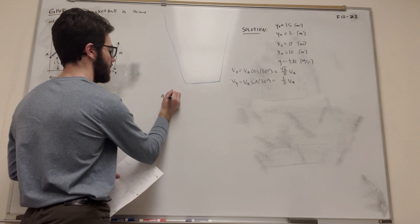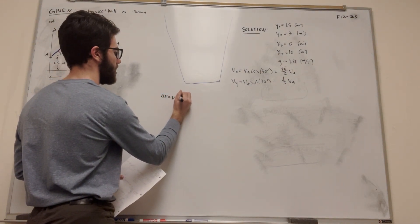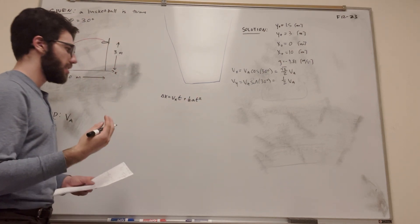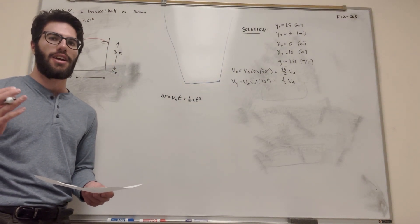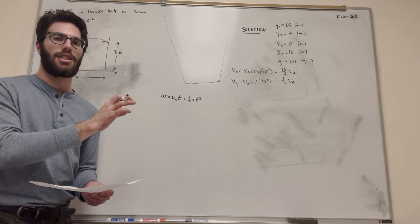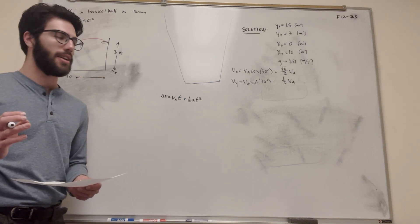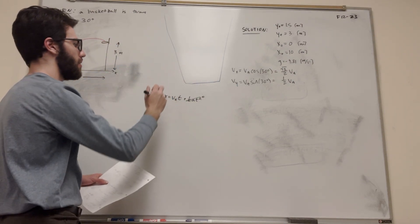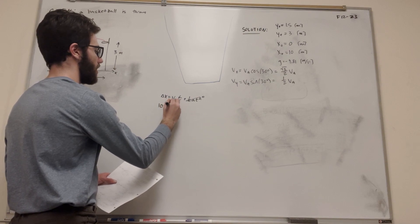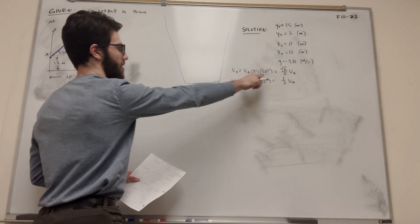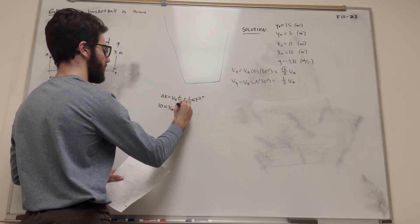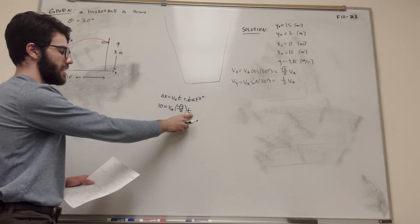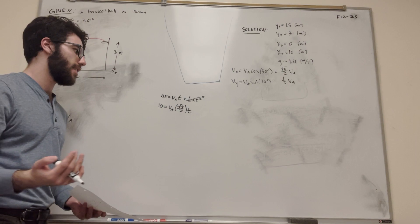Δx equals velocity-x times time plus (1/2)·acceleration·t². In the x direction there's no acceleration — the ball isn't going to accelerate or decelerate horizontally, so a equals zero. Delta x is x-final minus x-initial; x-initial is zero, so we get: 10 = va·(√3/2)·t. We still need time, so we have two unknowns — velocity and time — and can't solve it yet.